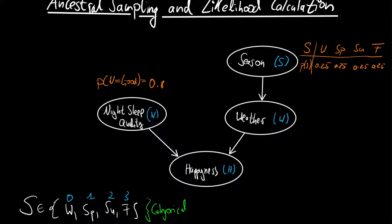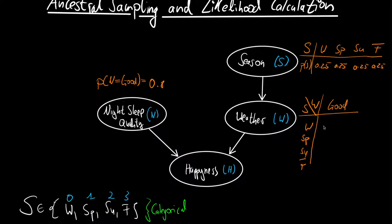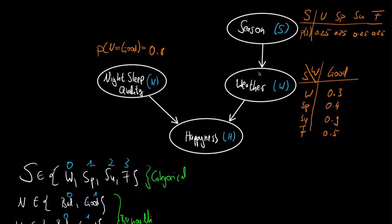Let's go on to the weather. We know the weather depends on the season, so we need one parameter to fully define the Bernoulli distribution, but since we have four different states of the root, we need four different parameters. We need to save the probability of the weather being good dependent on the season: in winter 30%, spring 40%, summer the chance is really high, and fall goes back down to 50%.